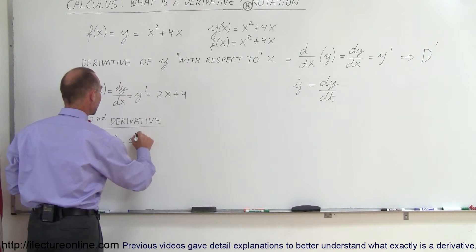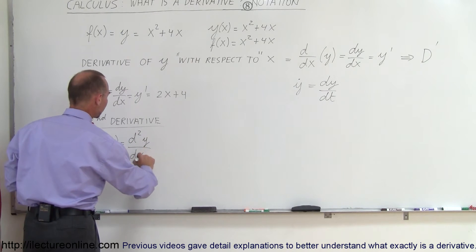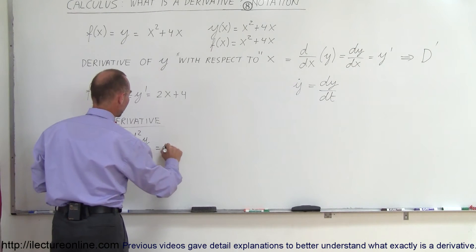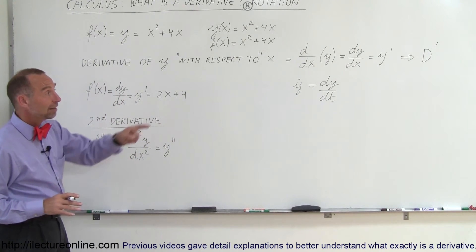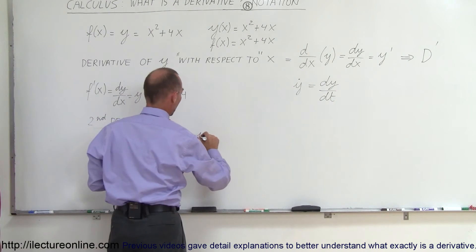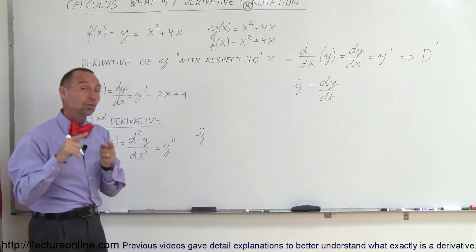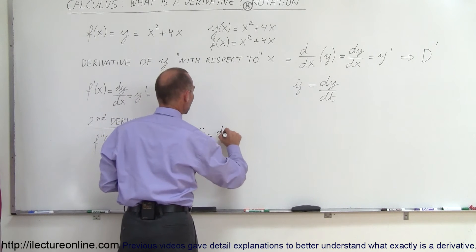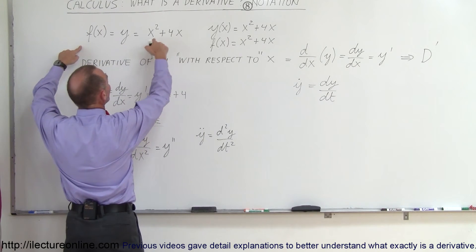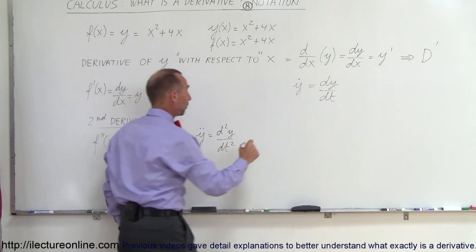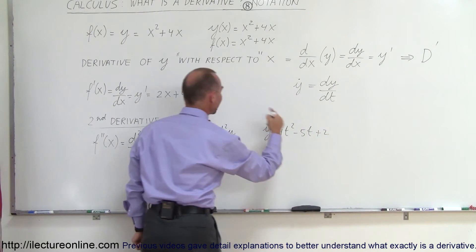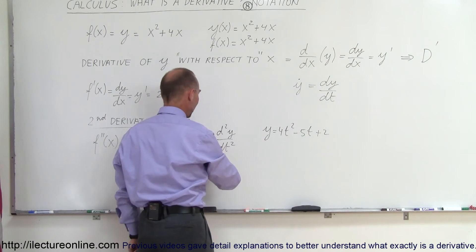Written in Leibniz form, the second derivative is d squared y over dx squared, meaning the second derivative of y with respect to x. We can also write it as y double prime. Using the tick-mark style, we put two tick marks; using dot notation, y double dot means the second derivative with respect to time, written as d squared y over dt squared. For a time-based example, consider y equal to 4t squared minus 5t plus 2.